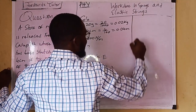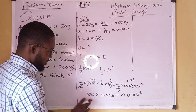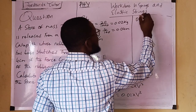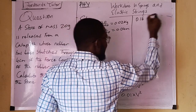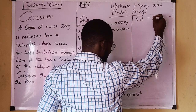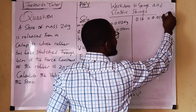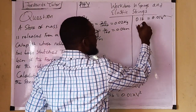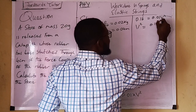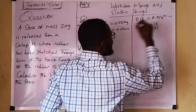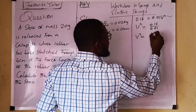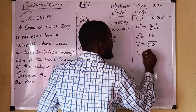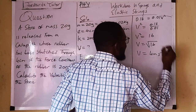100 × 0.0016 = 0.16, so we have 0.16 = 0.01 × v². Making v² the subject: v² = 0.16 / 0.01 = 16. Taking the square root, v = 4 meters per second.